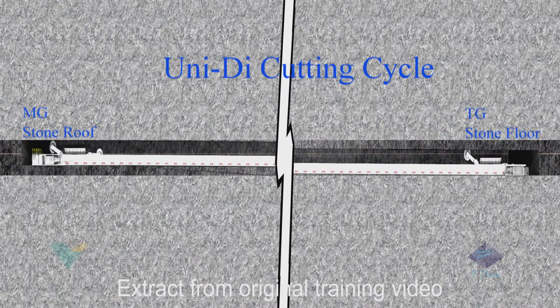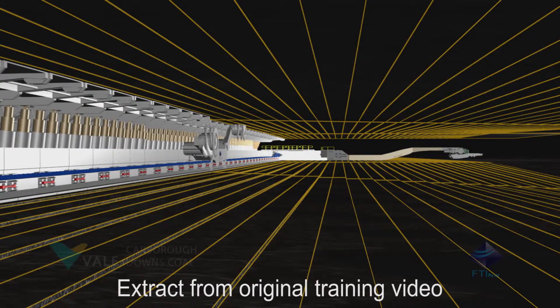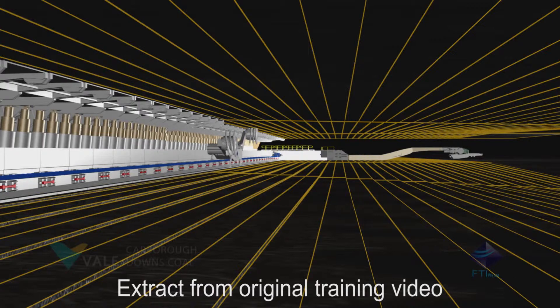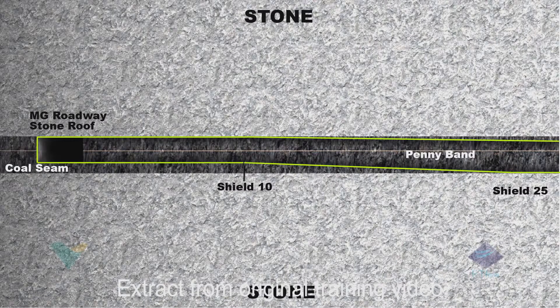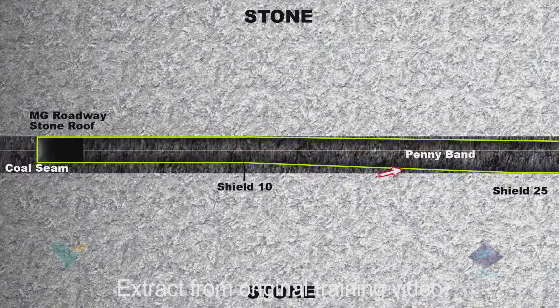This video demonstrates the uni-die cutting cycle with the main gate roadway installed with a stone roof and the tailgate with a stone floor. At the commencement of a new longwall block, the position of the coal face and the grading into the main gate and tailgate roadways will be established. The floor at the main gate will need to be graded up from the floor height to the roadway floor. The profile of the floor must be developed so that it remains flat to shield 10, then progressively grades down to the stone floor from shield 10 to shield 25.